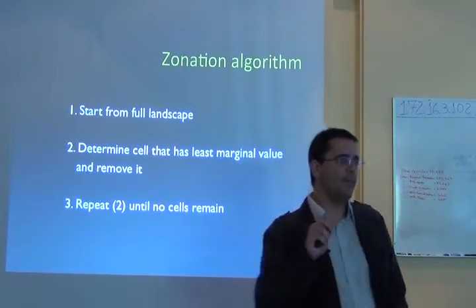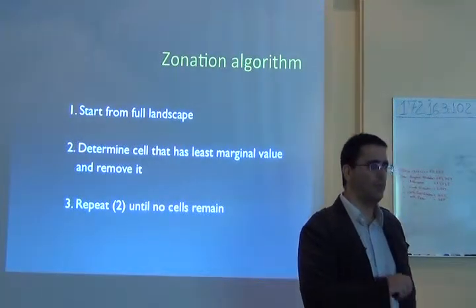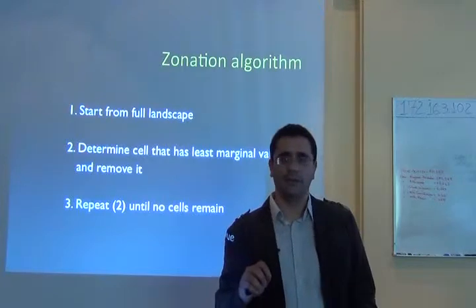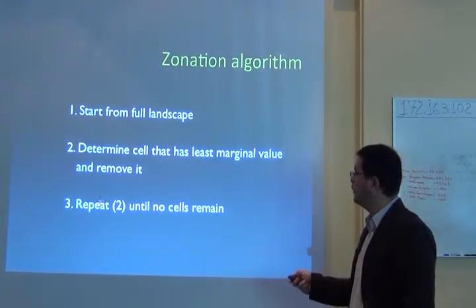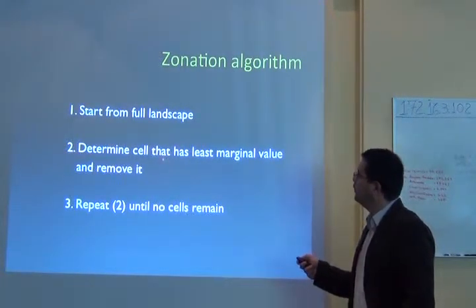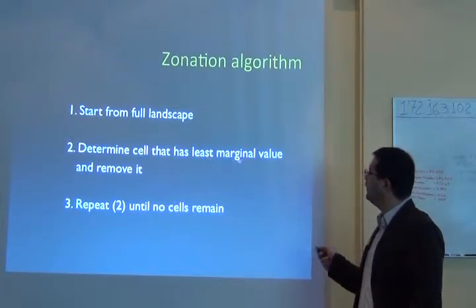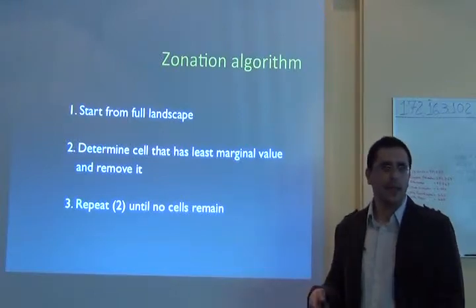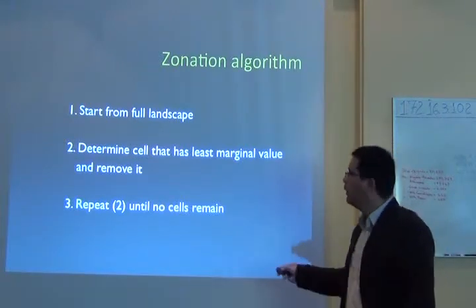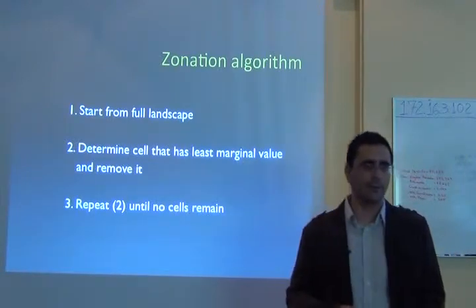Then you have to recalculate everything, because now that cell does not exist anymore. You recalculate and determine from the remaining cells which one has the least marginal value, remove it again, and go iteratively doing that until no cells remain in the landscape.